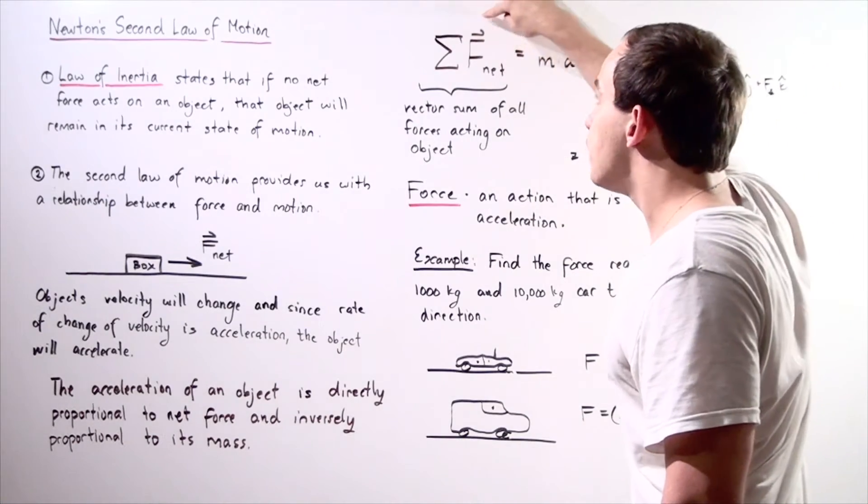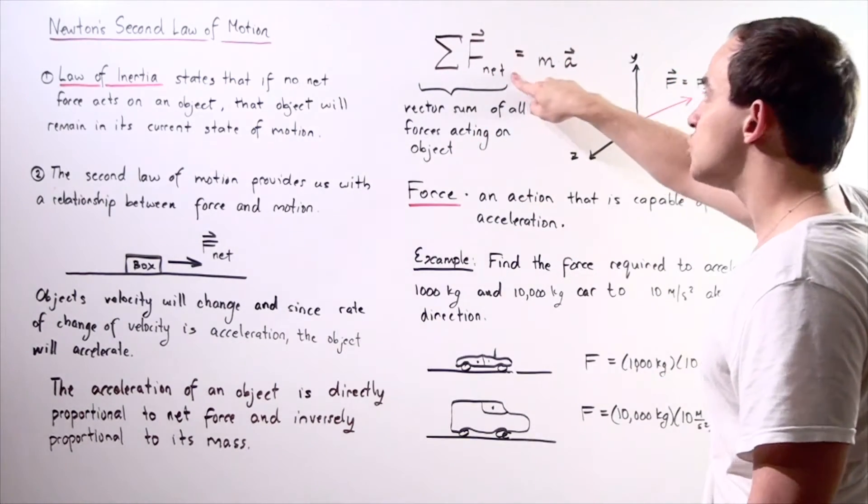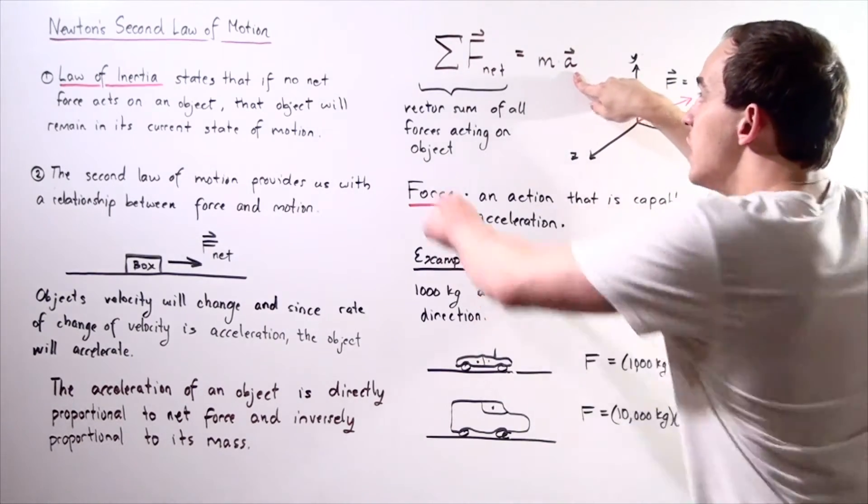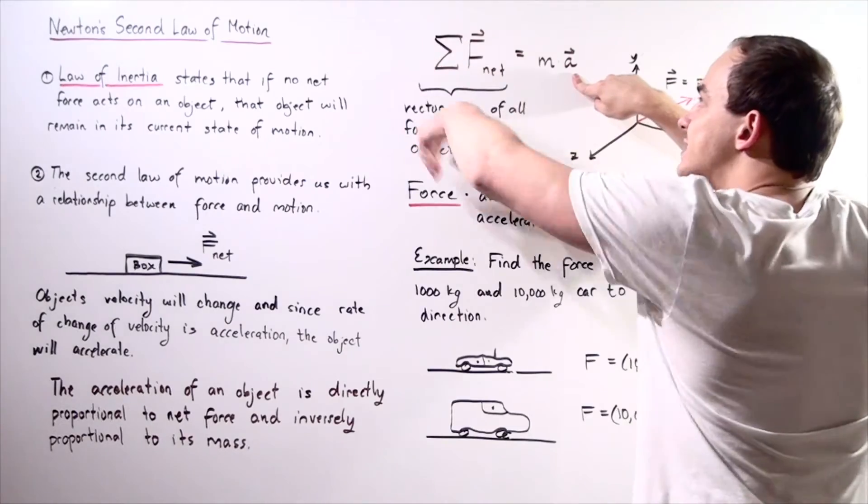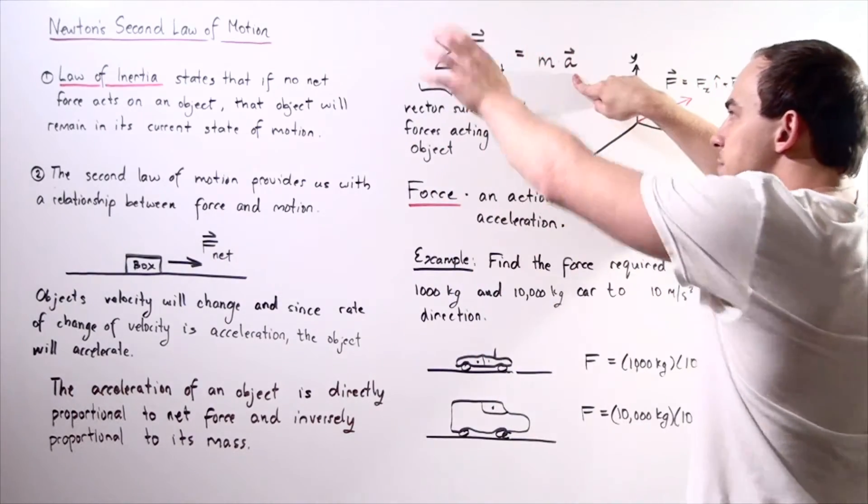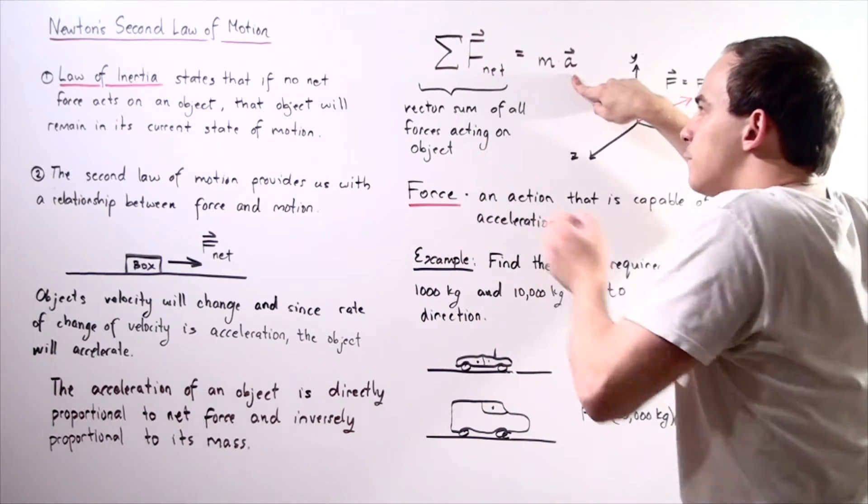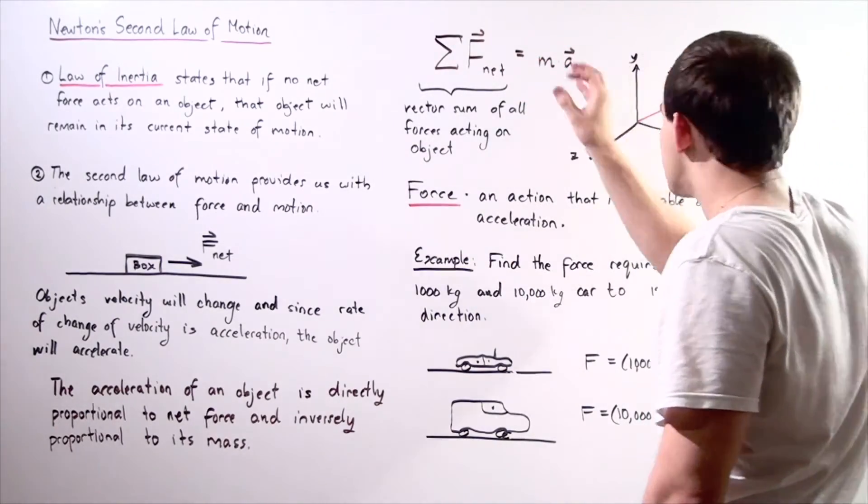The net force acting on our object is equal to mass times acceleration. This symbol simply means summation, and this means that we're taking the sum of all the vector forces acting on our object.